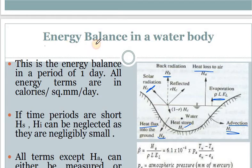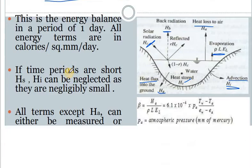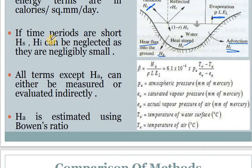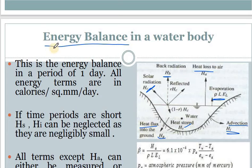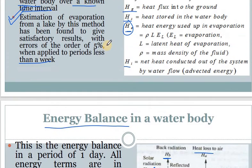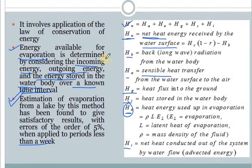The energy balance in the water body is calculated for a period of one day — all energy terms are in calories per square mm per day. If the time periods are short, H_i and H_s and H_n can be neglected as they are negligibly small. All terms except H_a can be either measured or evaluated indirectly. H_a is estimated by using the Bowen ratio.